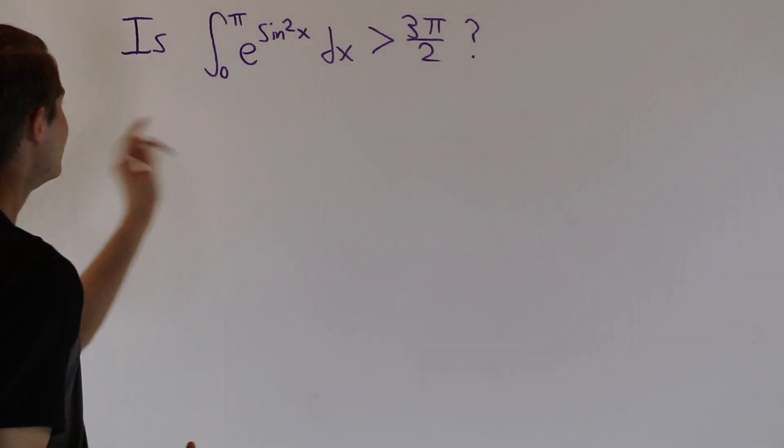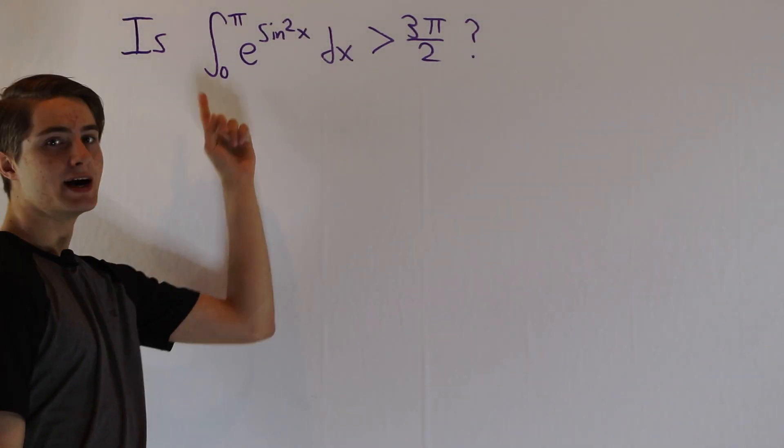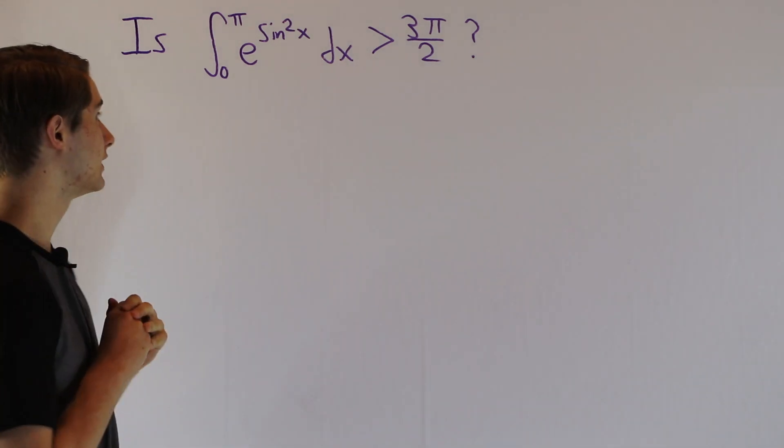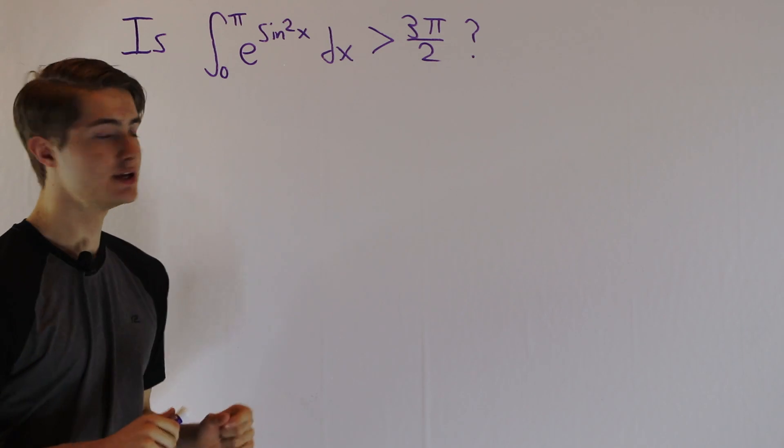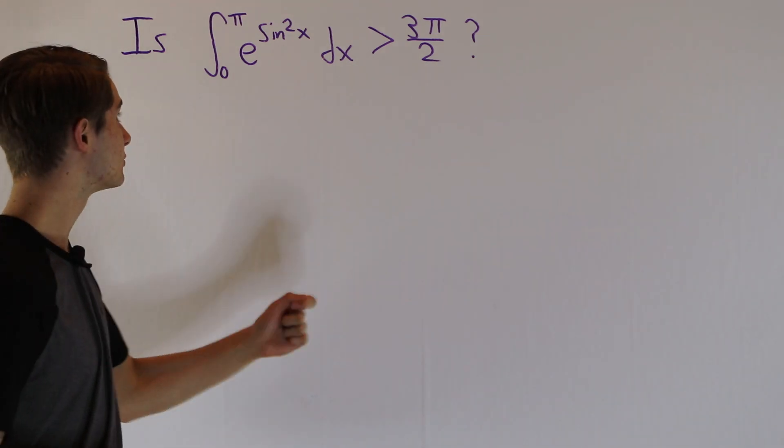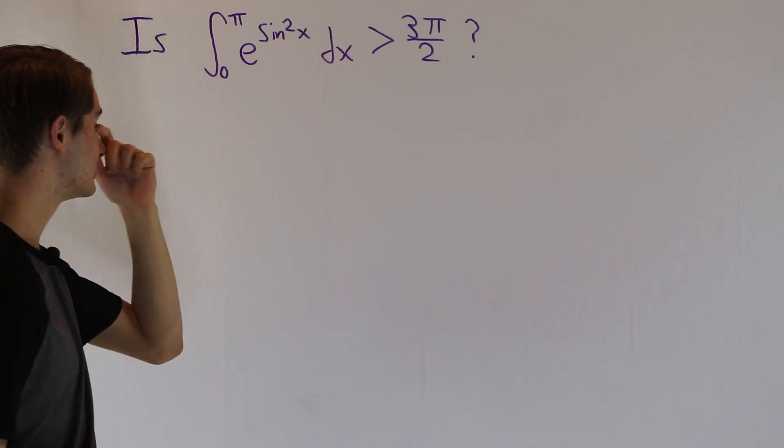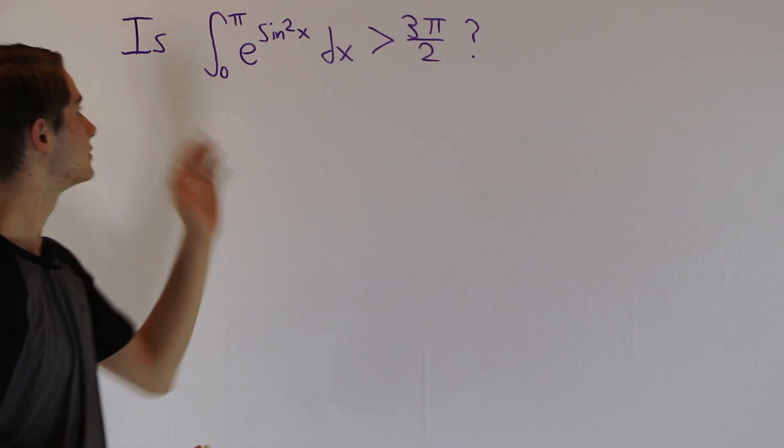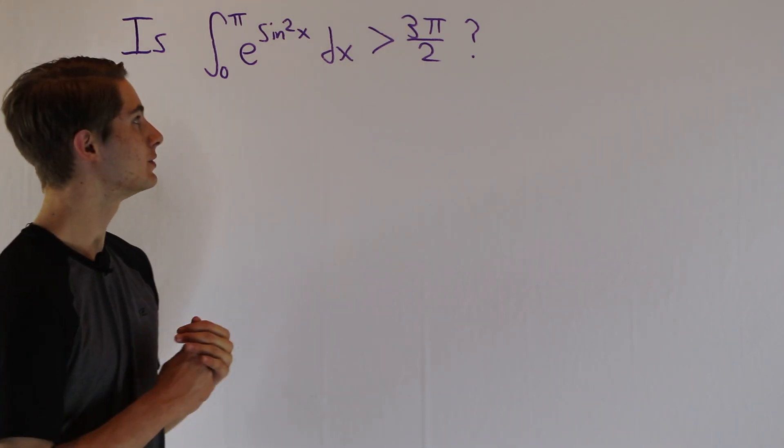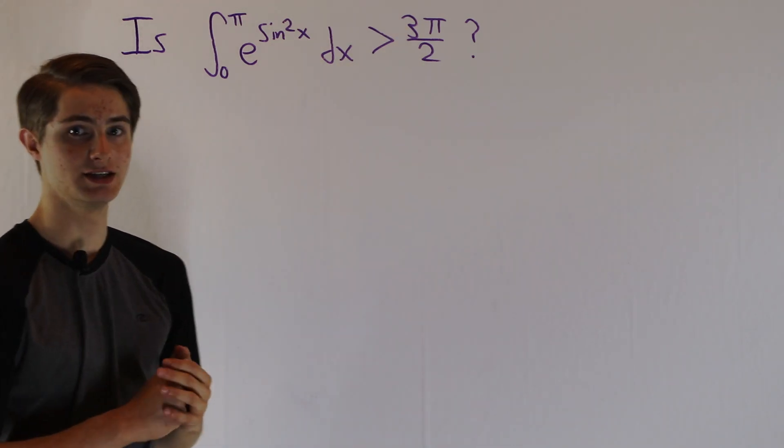So we are going to determine, is the integral from 0 to π of e to the sine squared x dx greater than 3π over 2? Now, immediately when we look at this integral, we see that it's not something that we can actually derive an answer to and evaluate to get an exact answer, which is the reason that this problem is phrased as a greater than question, not a question of what this integral exactly equals.